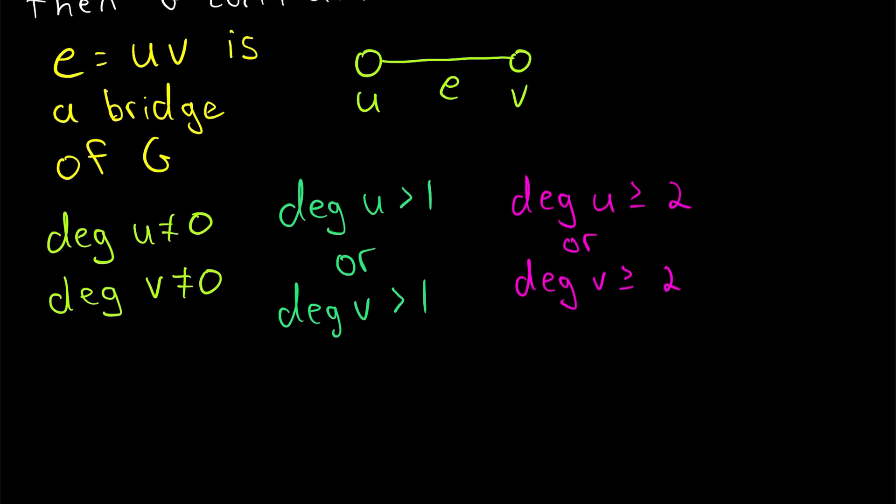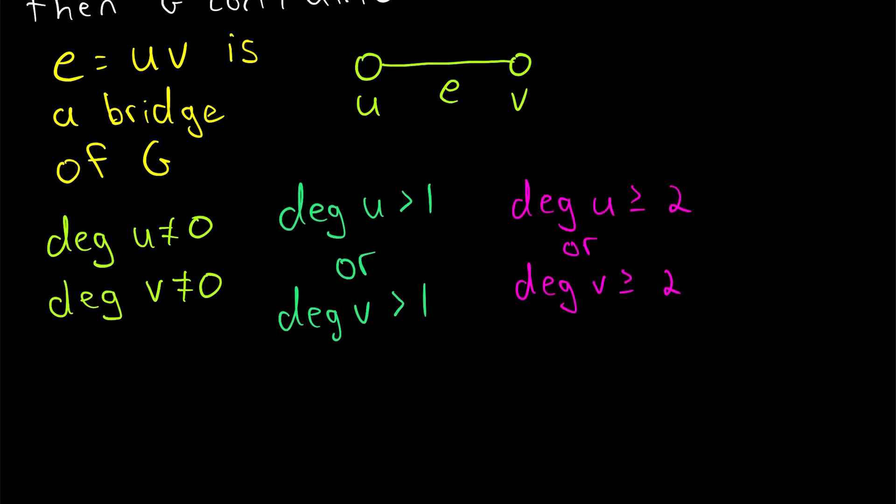And therefore, we don't know which vertex it is, but it doesn't matter. We have just proven that U or V must be a cut vertex of the graph. And again, that's because they are both end vertices of this bridge E, and at least one of them has a degree greater than or equal to 2. So by the theorem I mentioned earlier, at least one of them is a cut vertex of G.